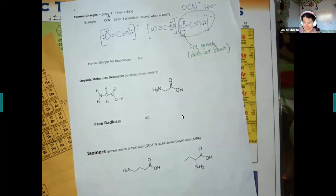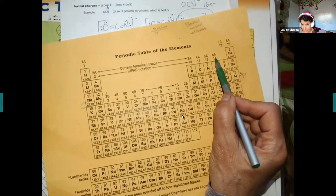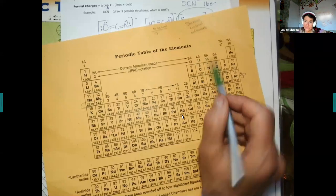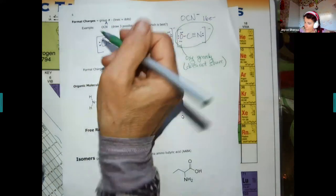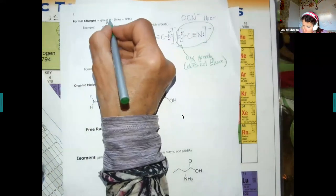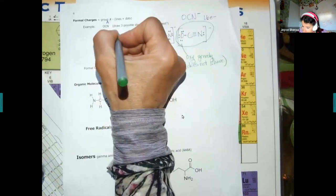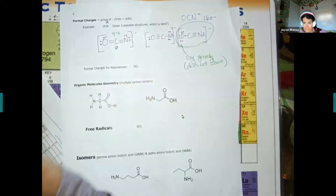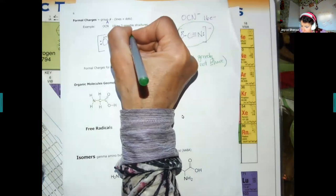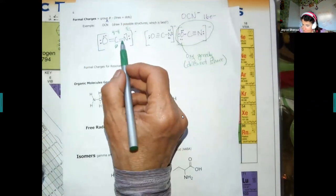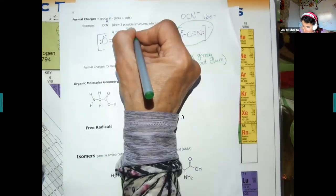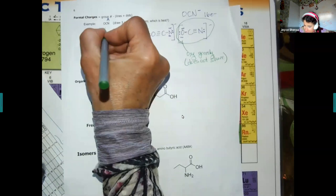Now we do the formal charges. The group number: oxygen is 6, nitrogen is 5, carbon is 4. For carbon: group number 4, minus 4 bonds around it = zero. For nitrogen: group number 5, minus 2 lines and 4 dots = 5 minus 6 = negative 1. For oxygen: group number 6, minus 6 (one line + four dots... wait, one bond + six dots) = 6 minus 6 = zero. When you add up formal charges, the sum must equal the charge of the compound — negative one. It does.